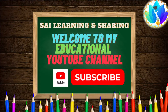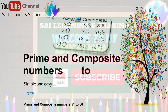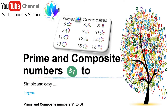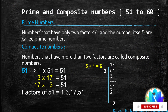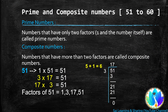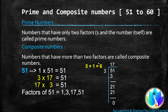Hello everyone, welcome to my YouTube channel. Today we are going to learn about prime and composite numbers from 51 to 60. It's very simple and easy. We already learned that a prime number has only two factors, and a composite number has more than two factors.